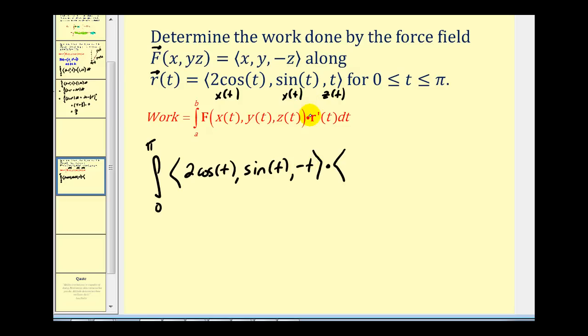We'll dot this with R prime of T. So we'll have negative two sine T, cosine T, and one.